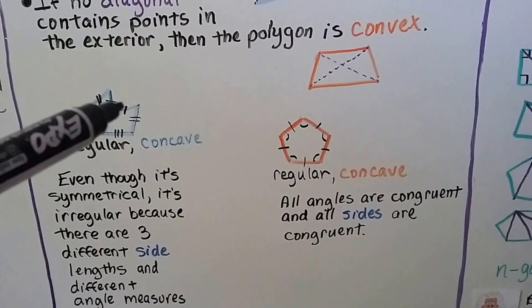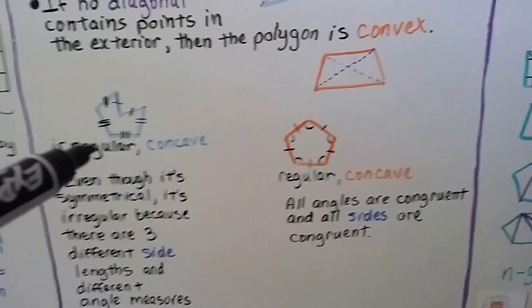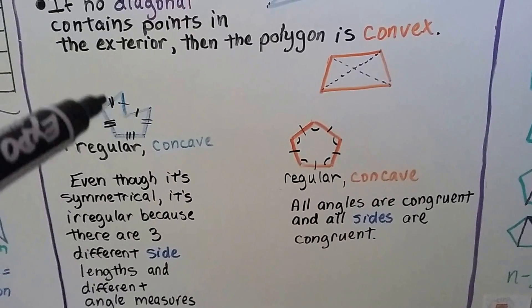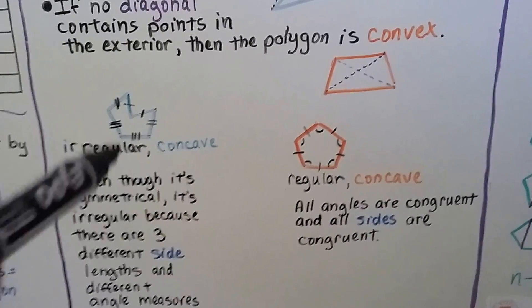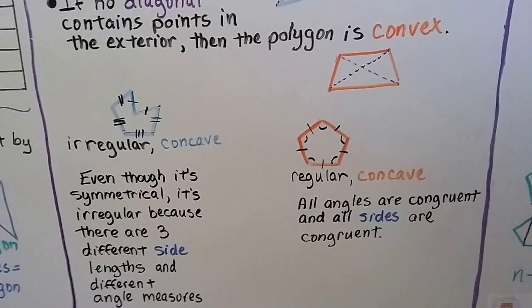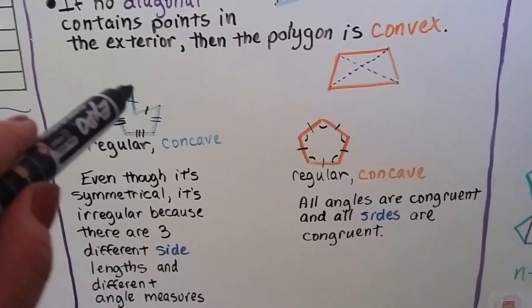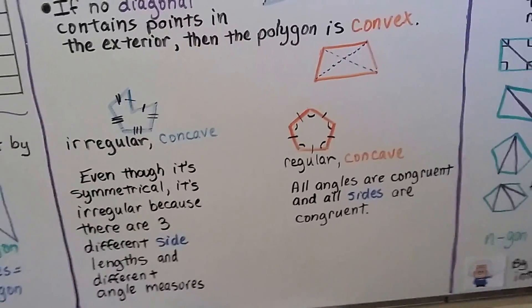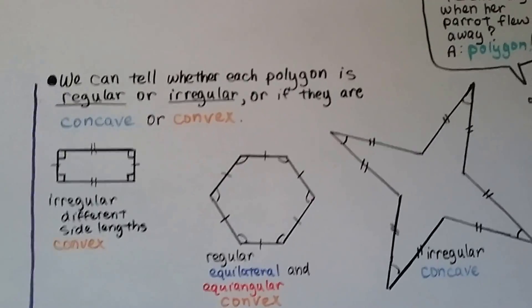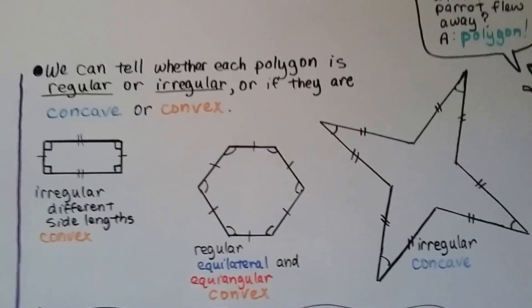This one, we have these two are congruent—that's one measure. These two are congruent—that's another measure. And then these two are congruent—that's another measure. That's three different side lengths. And we know that we could put a diagonal across there. So that's regular. We can tell whether each polygon is regular or irregular or if they are concave or convex.